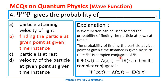The probability of finding the particle at a given point at given time instance is given by psi star psi. Here, psi star is the complex conjugate of psi. That means, if psi(x, t) = a(x, t) + i·b(x, t), then its complex conjugate is psi*(x, t) = a(x, t) − i·b(x, t). So, psi star psi gives us the probability of finding the particle at a given point at given time instance. So, here B is the correct option.